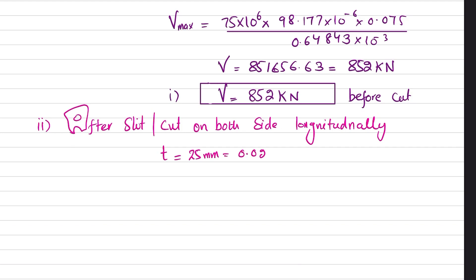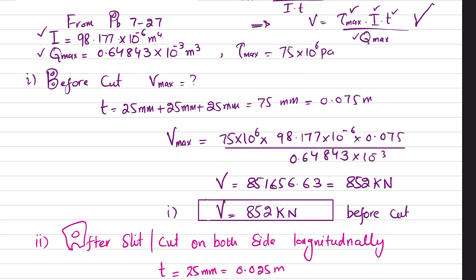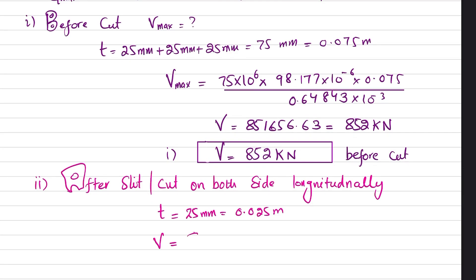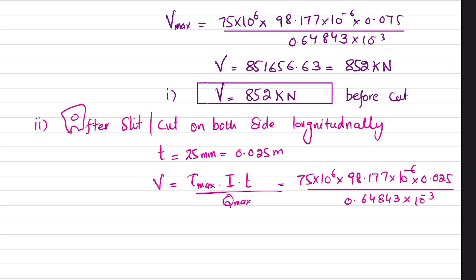You can just put it in the formula: V equals tau_max times I times t divided by Q_max. We'll put tau_max is 75 megapascals, I is 98.177 × 10^-6, and now t is 0.025, divided by Q_max which is 0.64843 × 10^-3.